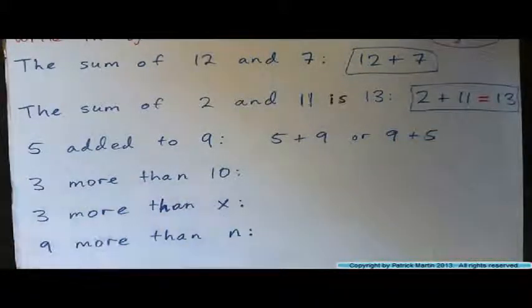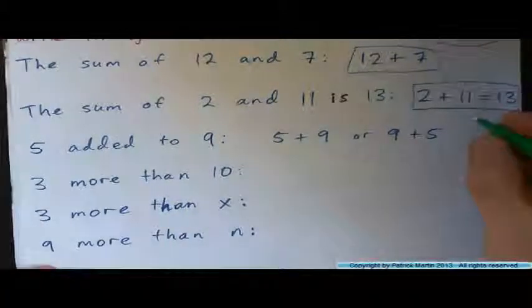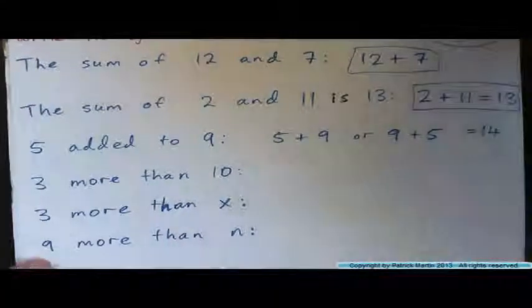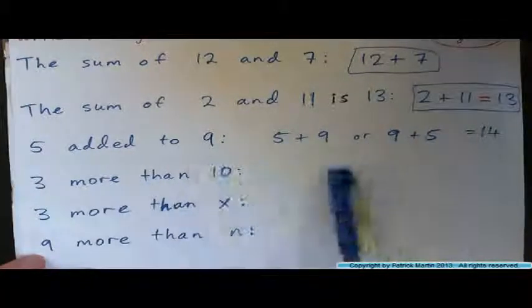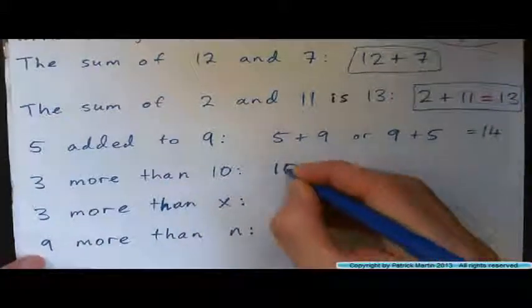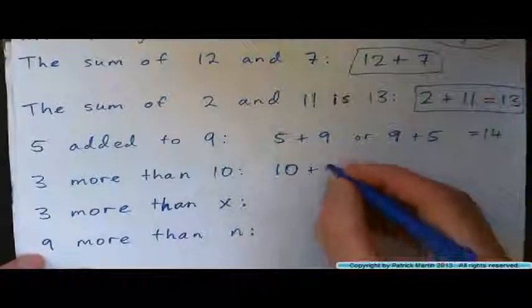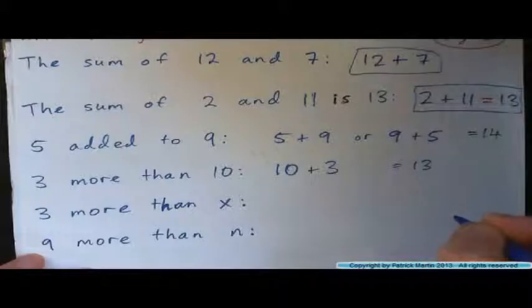How about three more than ten? How would you represent that? So we know, I mean, we know this answer, of course, is fourteen. But it's about writing it out, because that's a skill we'll need for algebra. Three more than ten is beginning with ten and adding on three, ten plus three, which, of course, is thirteen. We know that, right?